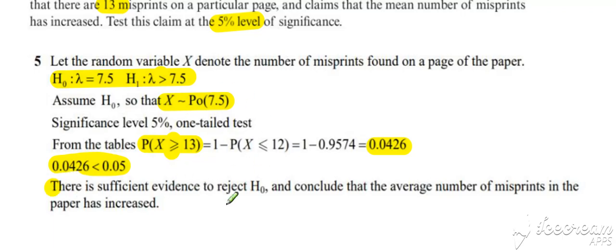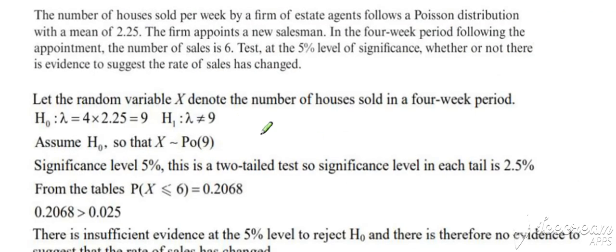So very similar to what we did with the binomial distribution, just the same process, different distribution. Next example, you've got to be a little bit careful here. We're given a mean of 2.25 per week, but the evidence that we've collected is for a four-week period. So we must adjust our lambda value for the time period for which we've collected the evidence.